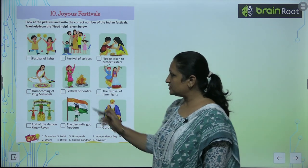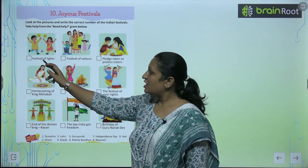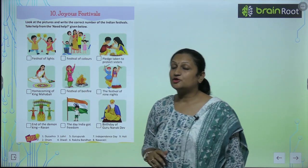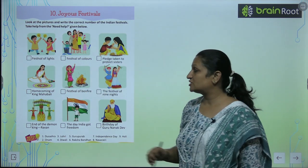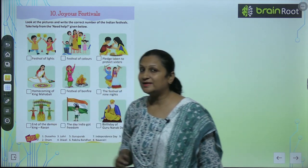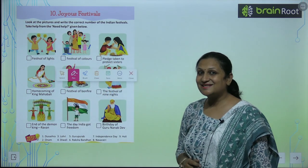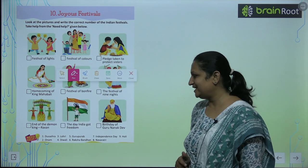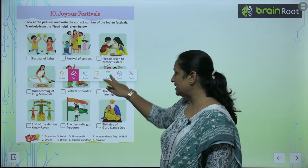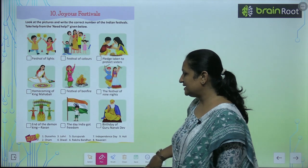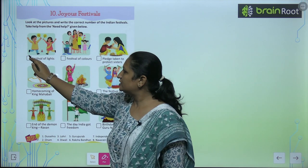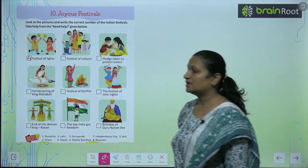Now see the first one. It is the festival of lights. Toh festival of lights kaun se festival hota hai, bacho? You all know it - yes, Diwali! Toh Diwali ka number kya hai? Diwali is at number 4. You will write 4 here.